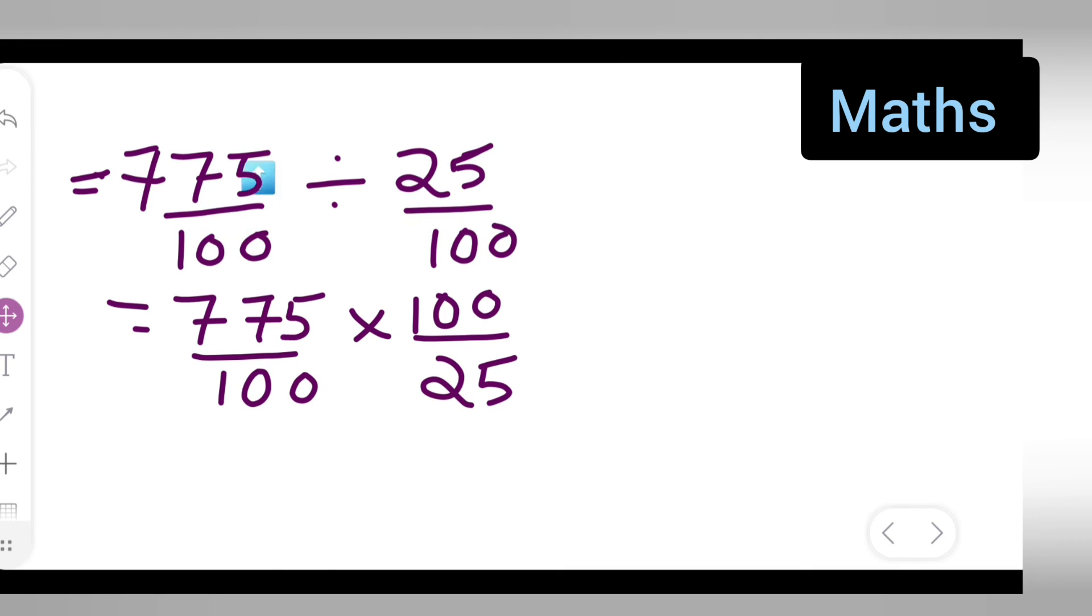So 100, 100 will get cancelled, so y'all are left with 7.75 upon 25, which is equal to - if you divide and see what y'all are going to get, the answer will be 31.